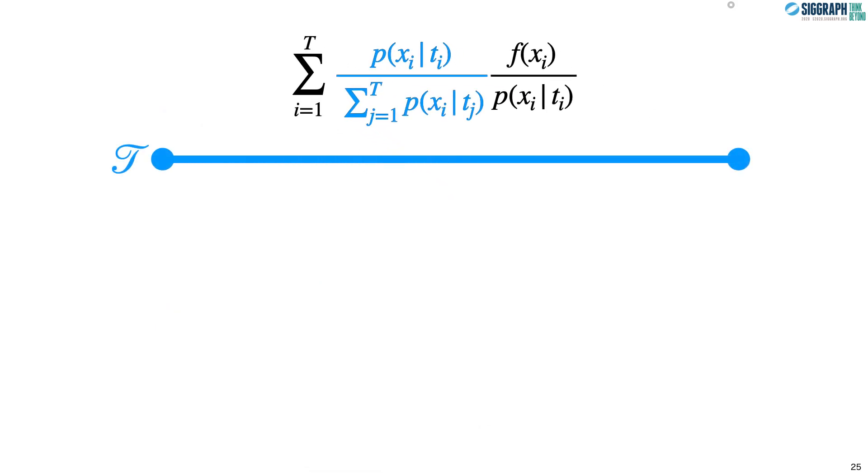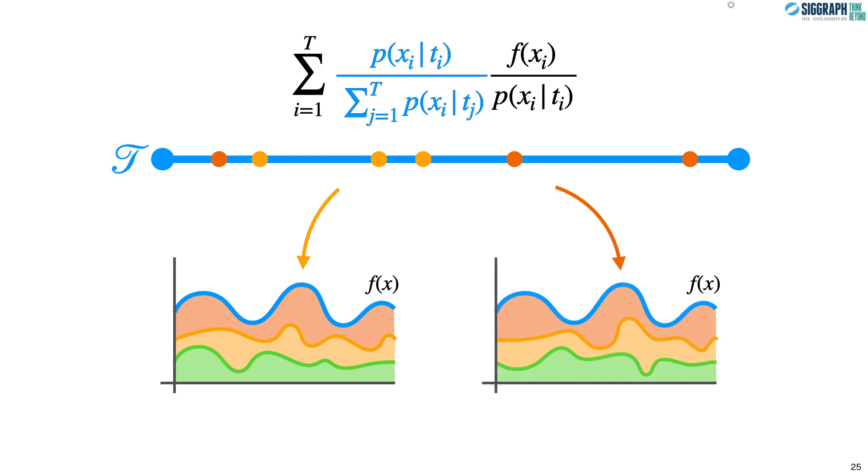In stochastic MIS, if we have one set of techniques, we'll have one set of weighted integrals. And if we have another set of techniques, we'll have another set of weighted integrals. For this particular formulation, as we keep increasing the number of technique sample pairs, we'll converge on the CMIS balance heuristic weights. SMIS as a finite sample approximation of CMIS will play an important role in the applications we're about to look at.